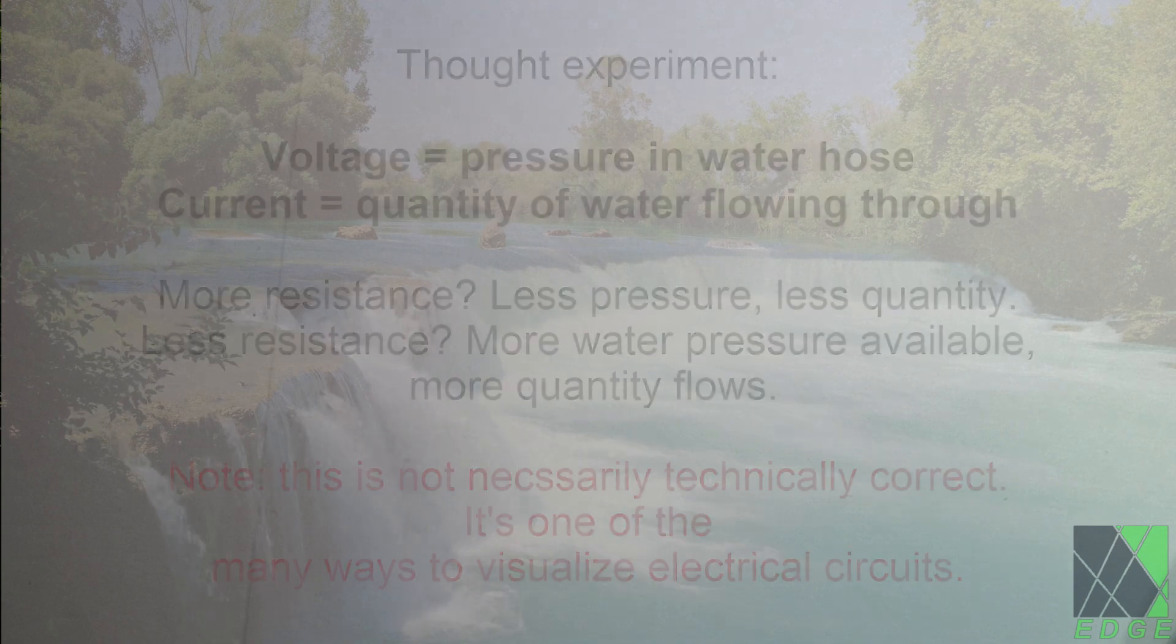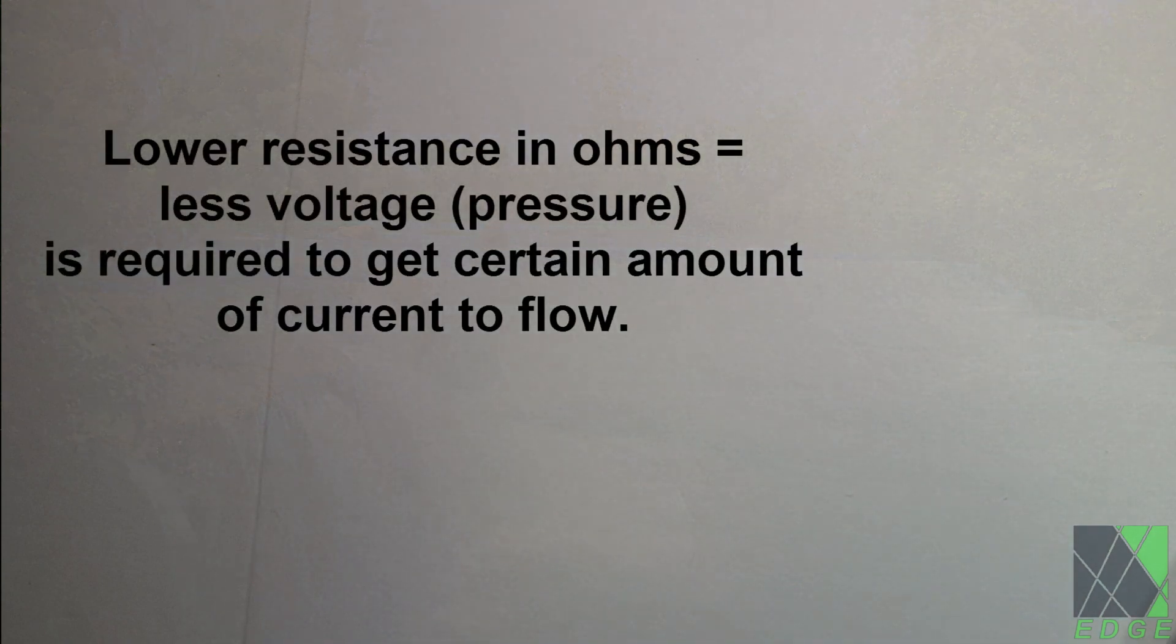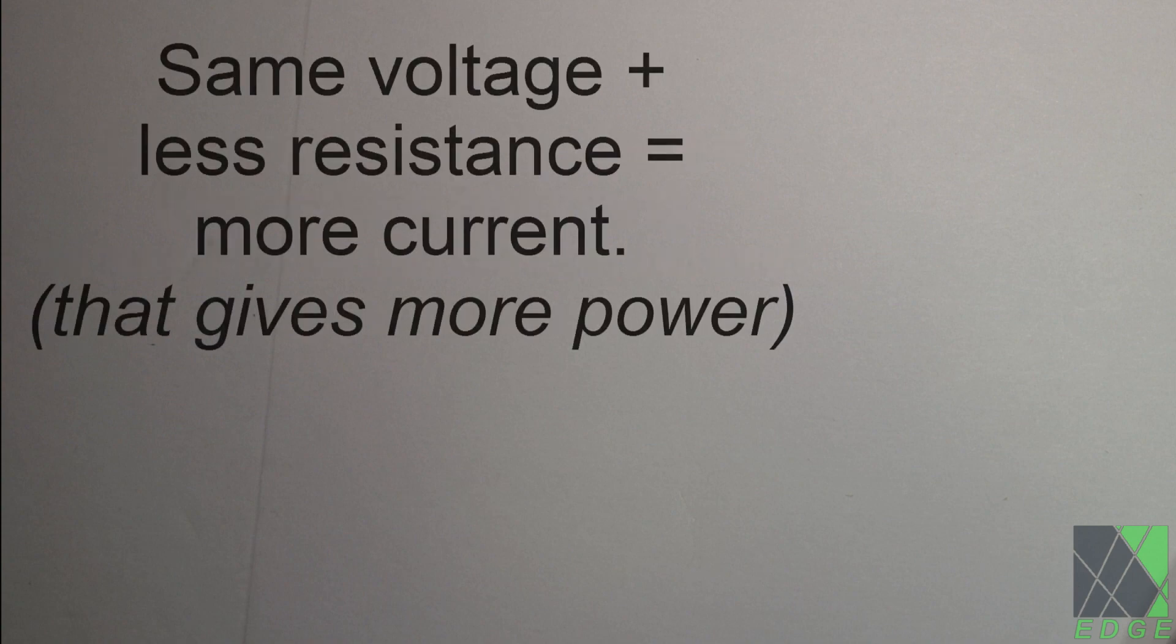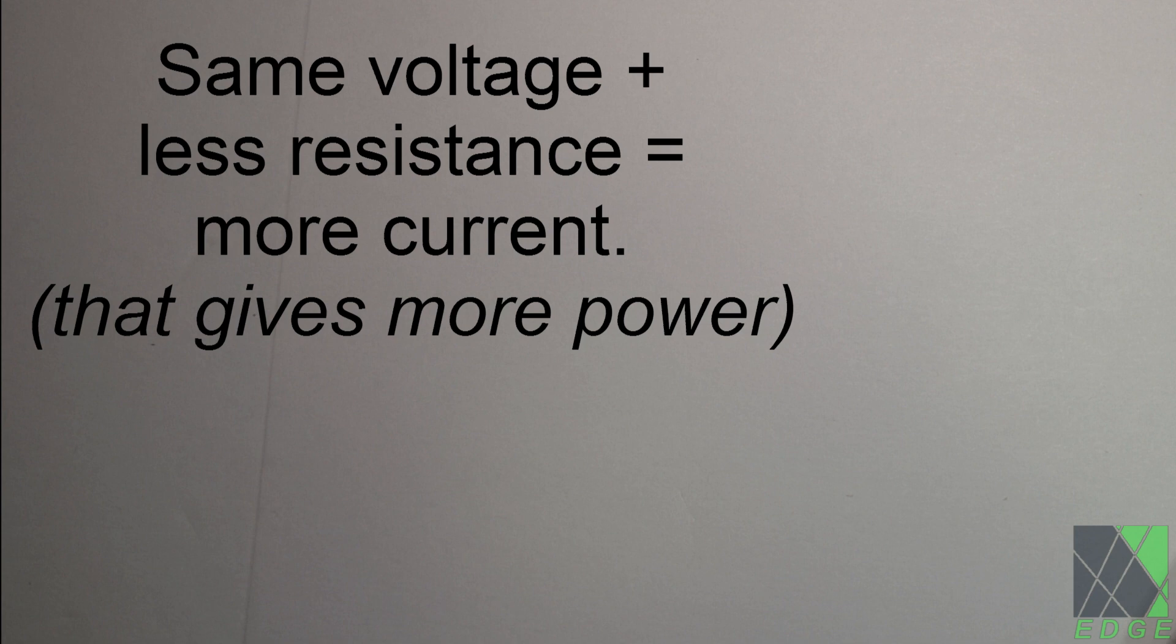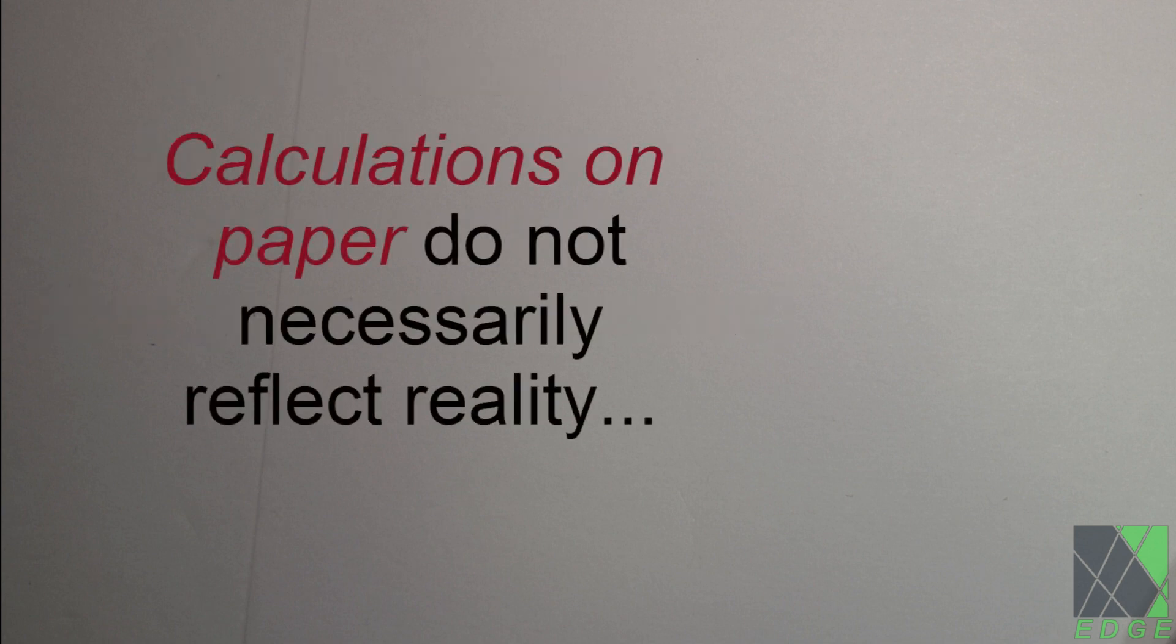If it has a lower resistance and current flows more easily, less voltage is required to flow the same current. Keep the voltage the same, but lower the resistance, you get more current and therefore more power. All of this can be mathematically calculated using the formula given, at least up to a point. Calculations on paper do not necessarily reflect the real world, but they are a good start. It's all interrelated mathematically.